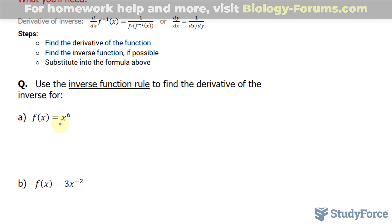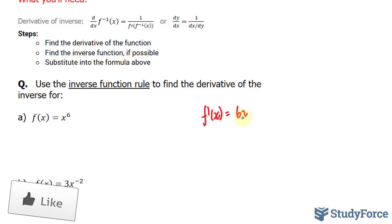So we'll start by finding the derivative of this function. We have f prime x is equal to 6x to the power of 5. Notice that I use the power rule here.